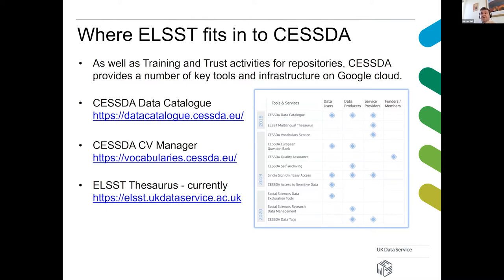CESSDA have a number of functions and missions — they produce tools and they work on training and trust. The main tools and platforms they produce are something called the CESSDA Data Catalogue, which harvests metadata from a number of repositories to produce a centralised catalogue; a CV manager for controlled vocabularies, developed mostly by GESIS; and, most importantly for this conversation, the ELST thesaurus, which is currently hosted at UK Data Service but will be migrating soon onto the CESSDA platform.